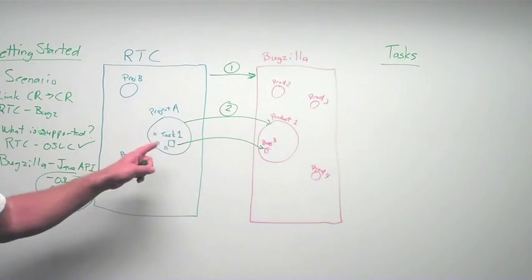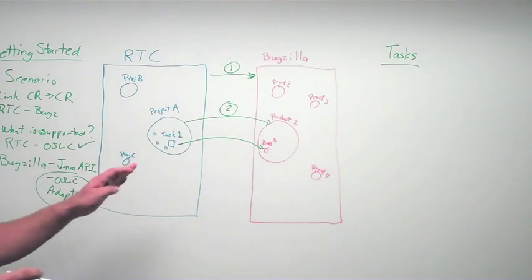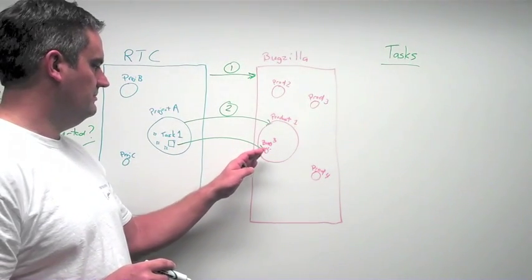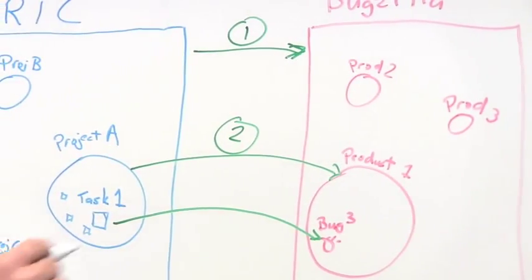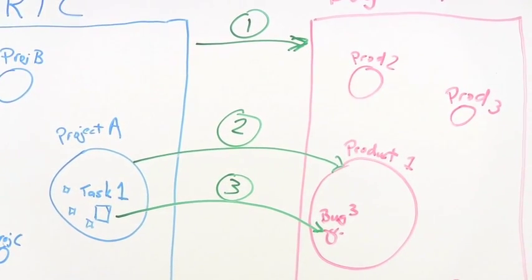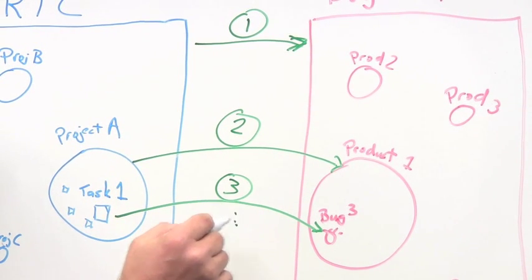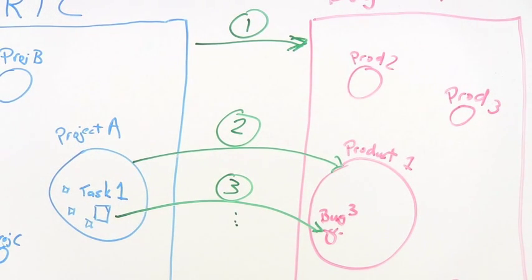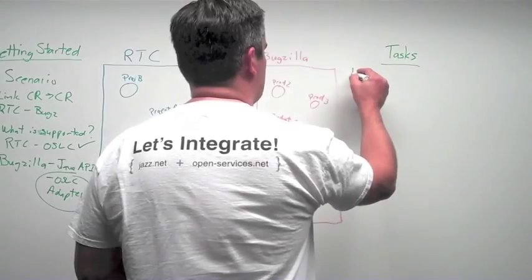Then we can, within our project, scope down to what task we're looking for, look for what bug we want to connect to, or create even within the Bugzilla system. That will be our third step in order to reach the end goal of having that link. Once you get here, there'll be some additional capabilities that you can have by having that relationship there that's OSLC-based.